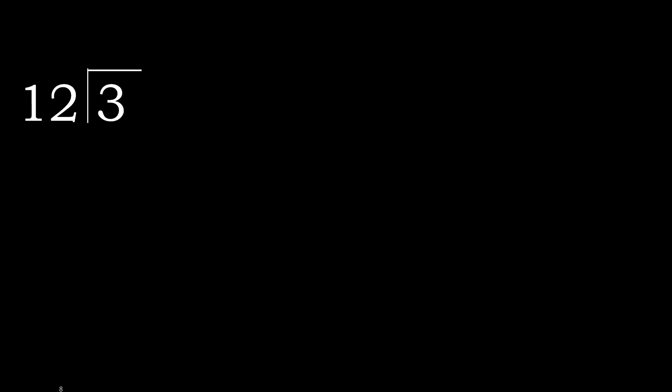3 divided by 12. 3 is less, therefore next. There is no number, therefore complete — always complete with 0. Here: 0 point.